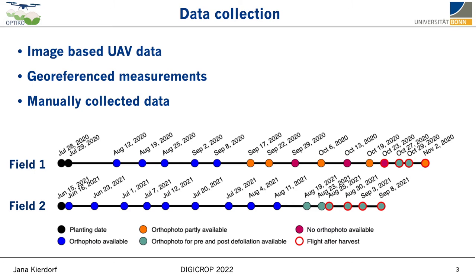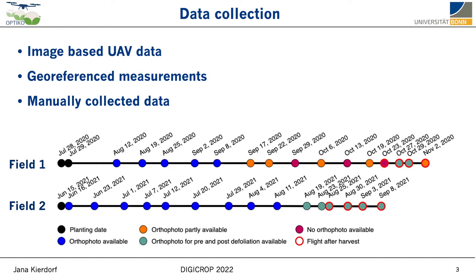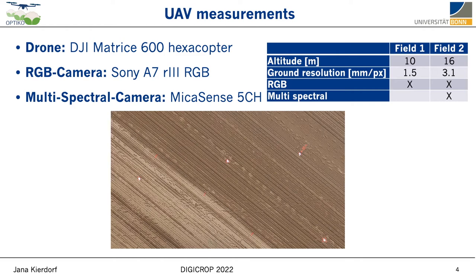In the following slide, we focus on examples for field two, because the procedure is similar for both fields. For data acquisition, we use a DJI Matrix 600 hexacopter with two cameras installed, an RGB and a multispectral one. And depending on the flying altitude, we reach ground resolutions of 1.5 mm per pixel and 3.1 mm per pixel.